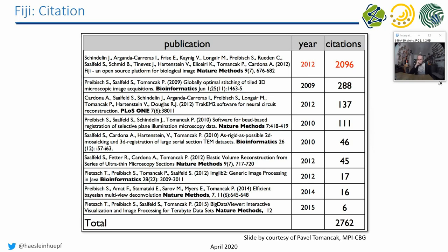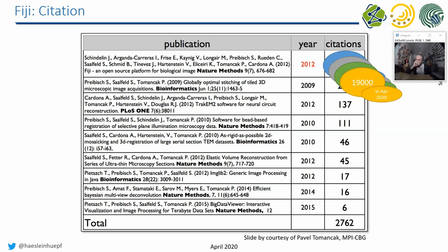If you use Fiji in a scientific paper, master's thesis, or PhD thesis, please cite it. The Fiji developers need citations to continue getting funding for further development. The citation count for the Fiji paper was around 2,000 in 2012, almost 3,000 in 2016, and is now approaching 20,000 citations — which shows how widely used this software is in scientific image analysis.